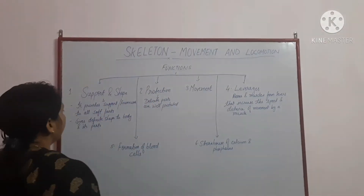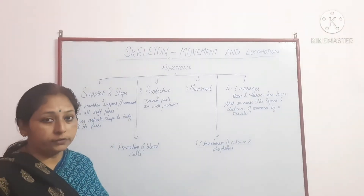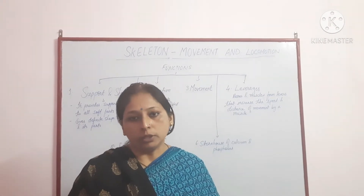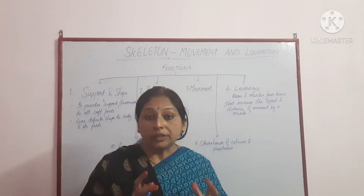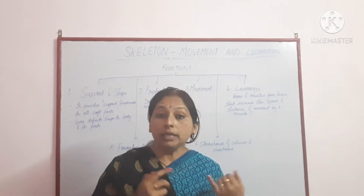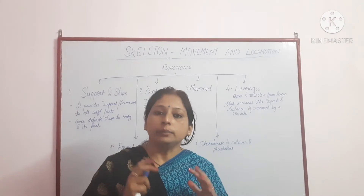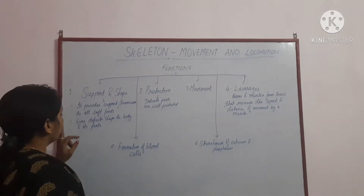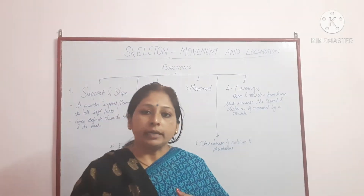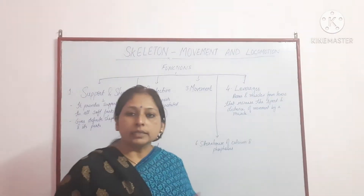Under support and shape, you can write that the skeleton provides a supporting framework to all soft parts and gives a definite shape to the body and its parts. For protection: the brain is the most delicate part of the body and is covered by the skull, which is the toughest covering. The lungs are protected by the rib cage.